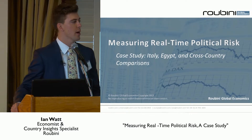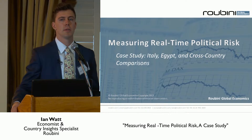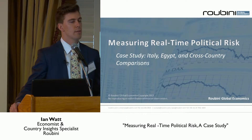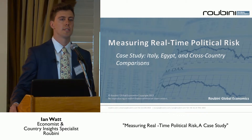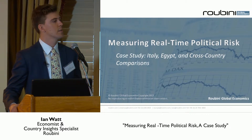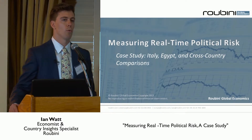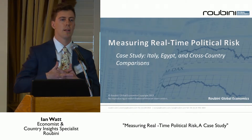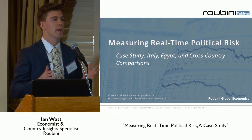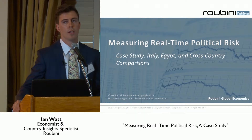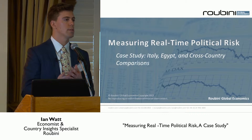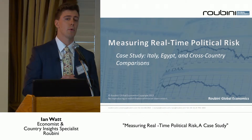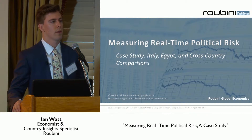My name is Ian Watt. I work at Roubini Global Economics, which is a macroeconomic research shop run by Nouriel Roubini. I work on a team called Country Insights, which is essentially a quantitative risk model that evaluates strengths and vulnerabilities around the world. We cover 174 countries, and we combine that with about 40 economists at RGE that evaluate the 40 main economies and regions and asset classes around the world.